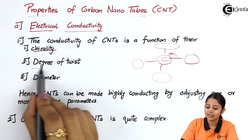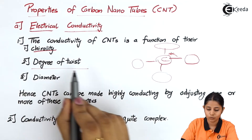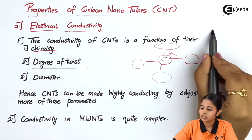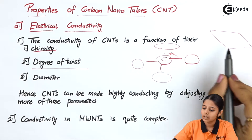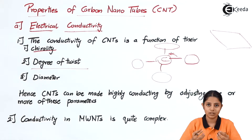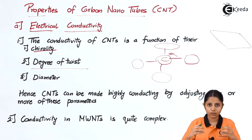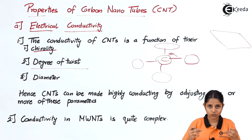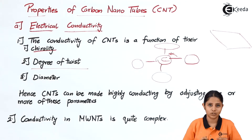The second factor is degree of twist. Generally we have long sheets of carbon nanotubes, and these sheets are rolled into cylindrical tubes. Because of the twist or the roll present inside the sheets, there is a degree of twist which leads to electrical conductivity.